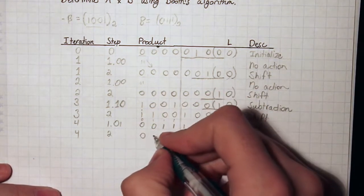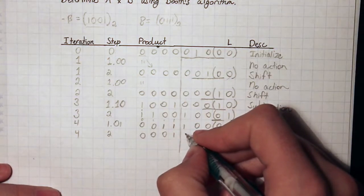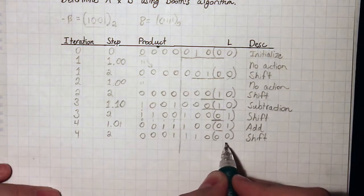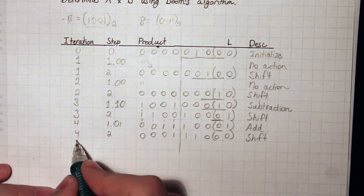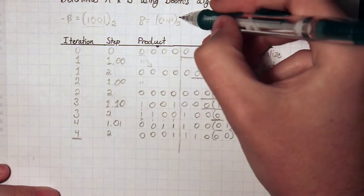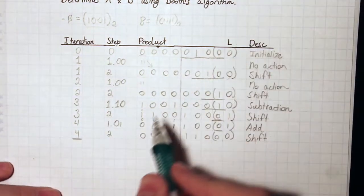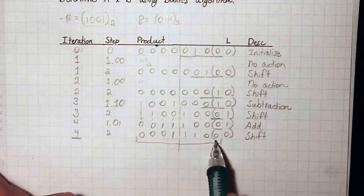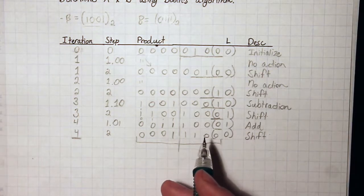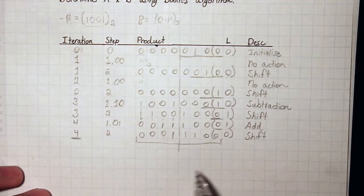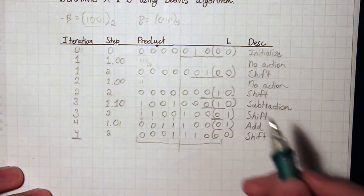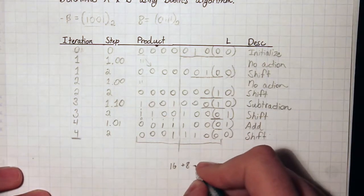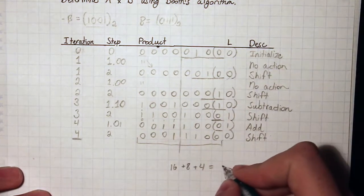After the final shift we get 00011100, and the multiplier has been completely shifted out. We're at iteration 4, step 2. Once you reach the number of bits of the largest operand at step 2, this is your result. We're multiplying two 4-bit numbers, so the result is stored in 8 bits. We can verify: this is 00011100, which equals 16+8+4 = 28, and indeed we were multiplying 7 times 4, so we're done.